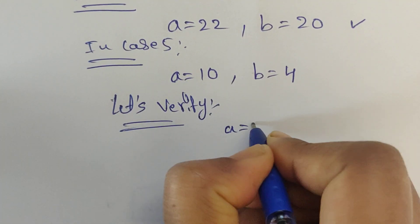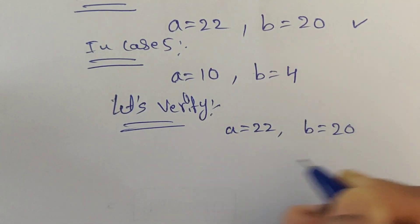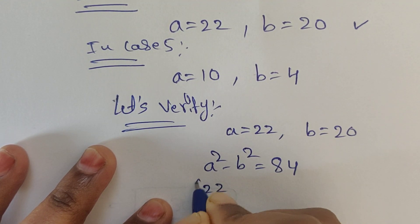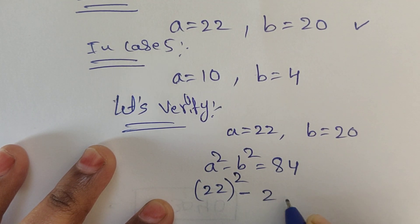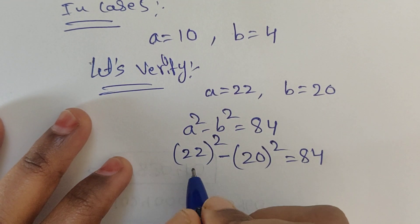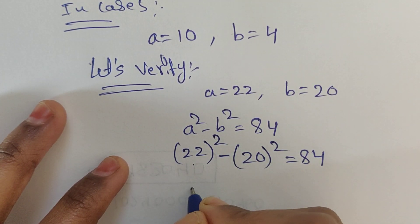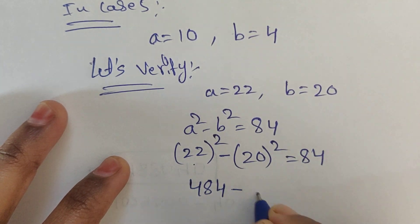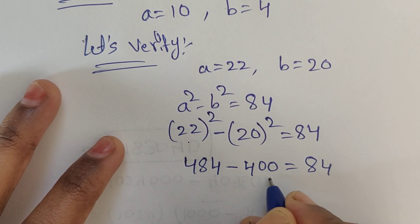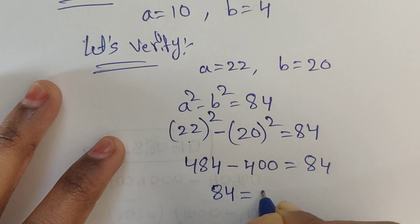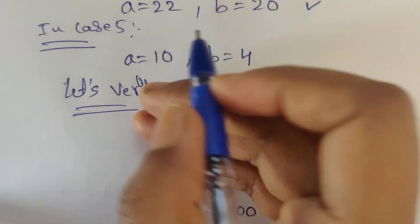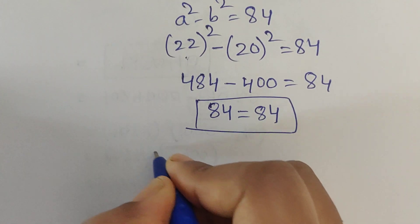Verification for Case 2: a equals 22 and b equals 20. The question is a squared minus b squared equals 84. Substituting: 22 squared minus 20 squared equals 484 minus 400 equals 84. So 84 equals 84 — this is true.